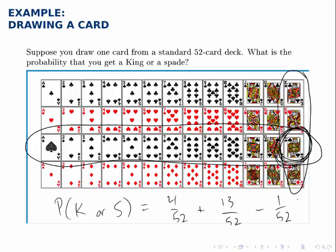Now adding and subtracting these together, 4 plus 13 is 17 minus 1 is 16. So the probability of drawing a king or a spade is 16 out of 52.